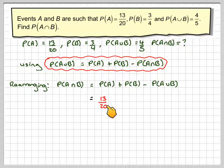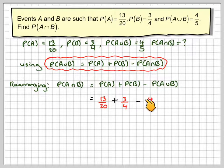So that's going to be the probability of A, which is 13 out of 20, plus the probability of B, which is 3 over 4, minus the probability of A union B, which is 4 out of 5. Put these all over a common denominator.